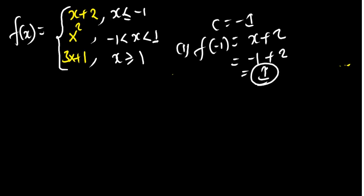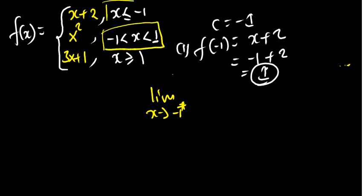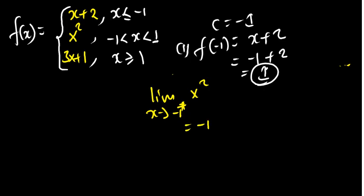Now for the second condition, we check the left-hand limit as x approaches negative 1. From the left side, we can use either the first or second equation. Using x squared and plugging in negative 1: negative 1 squared equals 1. For the right-hand limit as x approaches negative 1 from the right, the second equation applies: negative 1 squared also equals 1.